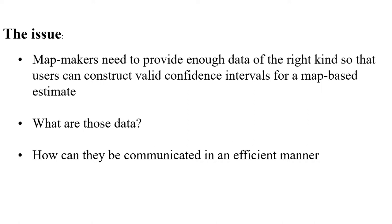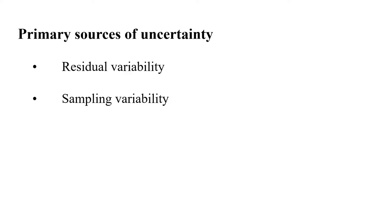The questions are then: what are those data that are required and how can they be communicated in an efficient manner? When maps are constructed using some kind of a prediction technique based on underlying predictor variables, two sources of uncertainty have to be considered: residual variability and sampling variability.